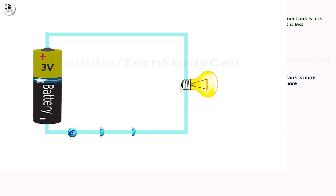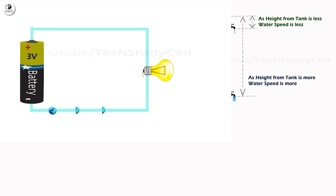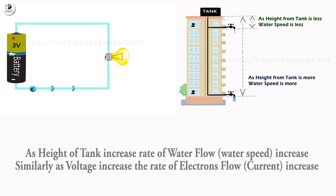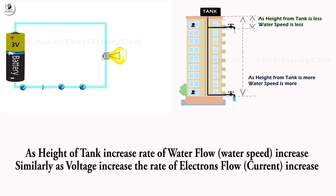Same, we can compare with the previous example. If we increase the height of the water tank from the tap, the speed of the water coming out from the tap will be increased. Like that, if we increase the voltage, then the rate of flow of electrons, which is current, will be increased.